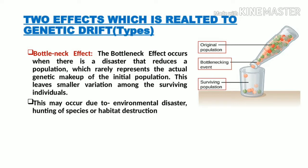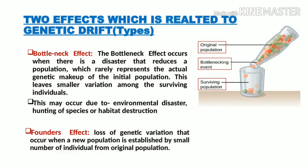The bottleneck effect is mainly seen whenever there is an occurrence of a natural calamity related to environmental disaster, hunting of species, or habitat destruction. As a result of the bottleneck effect, the overall population gets reduced, there is a loss of variation from the surviving population, and the surviving population does not represent the actual genetic makeup of the original population.